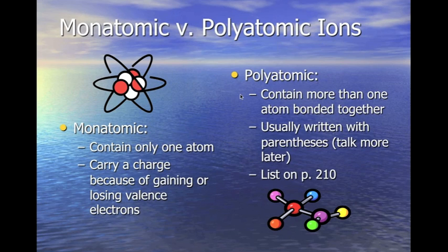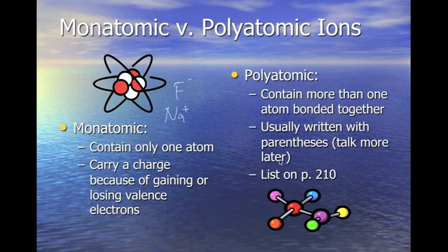Now we're going to look at monatomic versus polyatomic ions. A monatomic ion contains only one atom and carries a charge because it gains or loses an electron — for example, sodium (Na+) or fluorine (F-). A polyatomic ion contains more than one atom bonded together. It's usually written in parentheses, and we have a list of them on page 210. For example, carbonate CO3 has a negative 2 charge.